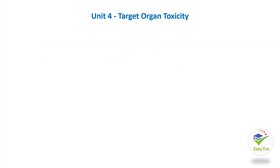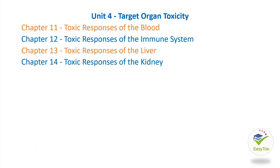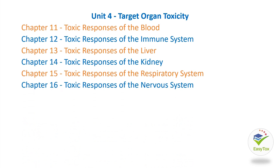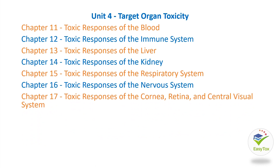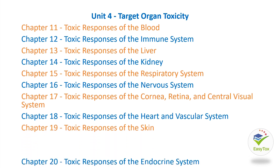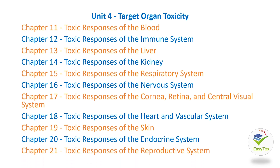Unit 4, Target Organ Toxicity, is the biggest unit in this edition, containing 11 chapters: Chapter 11, Toxic Responses of the Blood; Chapter 12, Toxic Responses of the Immune System; Chapter 13, Toxic Responses of the Liver; Chapter 14, Toxic Responses of the Kidney; Chapter 15, Toxic Responses of the Respiratory System; Chapter 16, Toxic Responses of the Nervous System; Chapter 17, Toxic Responses of the Cornea, Retina, and Central Visual System; Chapter 18, Toxic Responses of the Heart and Vascular System; Chapter 19, Toxic Responses of the Skin; Chapter 20, Toxic Responses of the Endocrine System; Chapter 21, Toxic Responses of the Reproductive System.